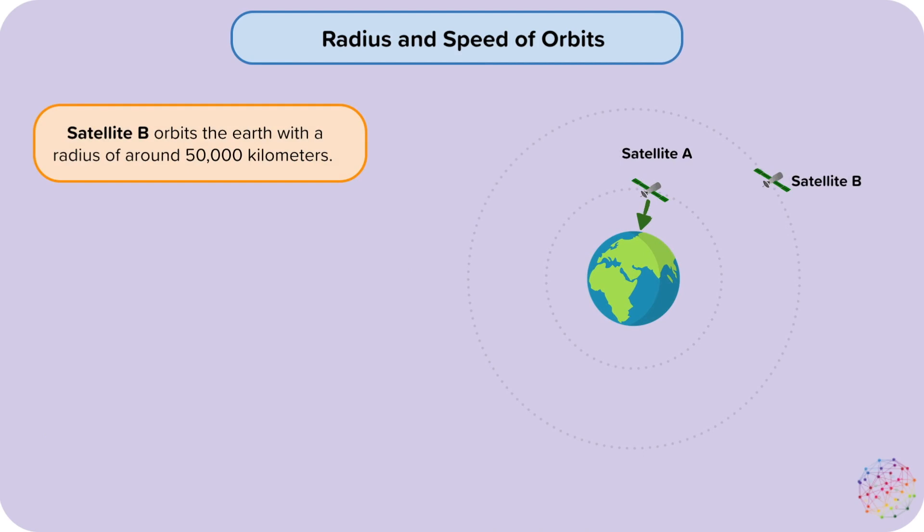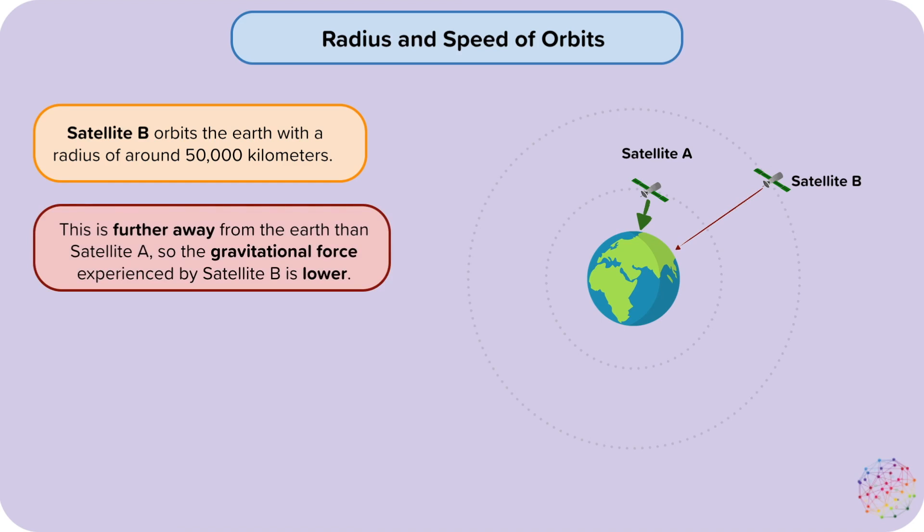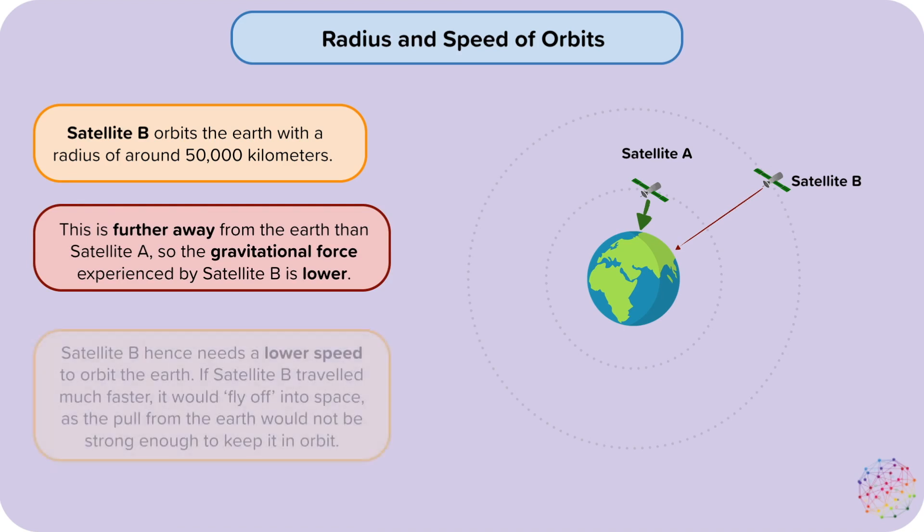Satellite B orbits the Earth with a radius of around 50,000 kilometres. This is further away from the Earth than satellite A, so the gravitational force experienced by satellite B is lower. Satellite B hence needs a lower speed to orbit the Earth. If satellite B travelled much faster, it would fly off into space, as the pull from the Earth would not be strong enough to keep it in orbit.